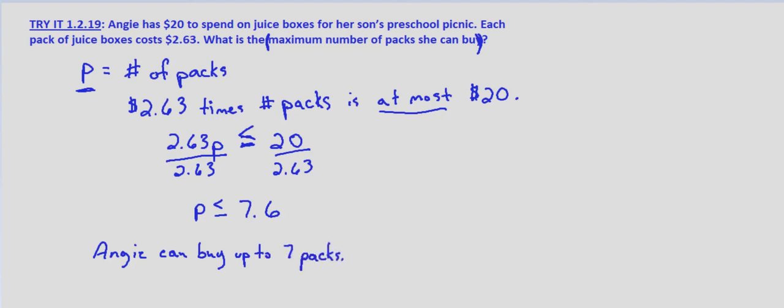Now we can check this solution by making sure she has enough money. So 7 packs times $2.63 per pack is $18.41. That is less than $20. So she has enough to buy those. So let's check one above that.